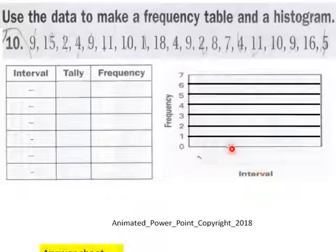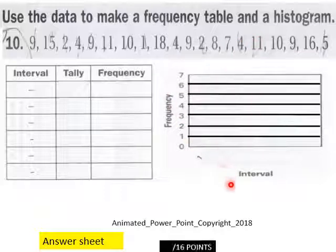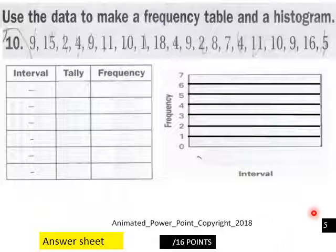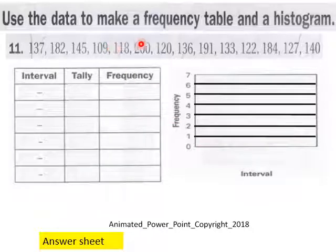Page five: use the data to make a frequency table and a histogram. You got 16 points here for page five. Make a frequency table, then make your histogram here. 16 points for page five. Page six: again, you got data, a frequency table, and then a histogram here.